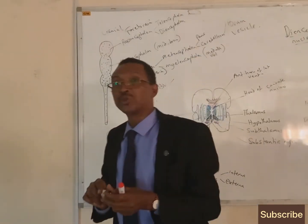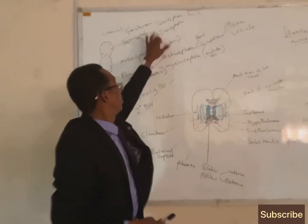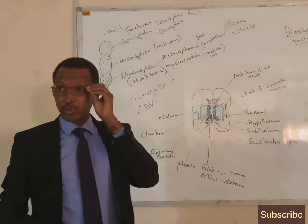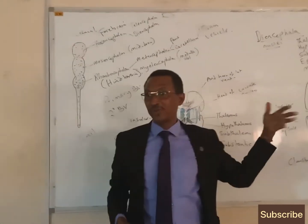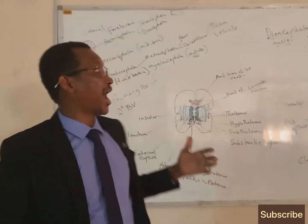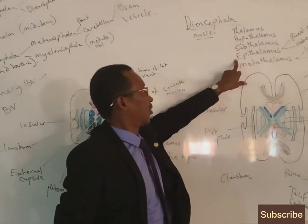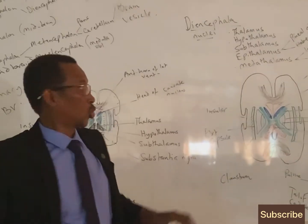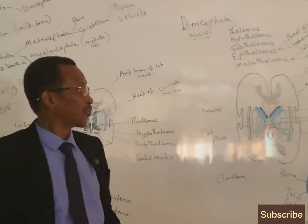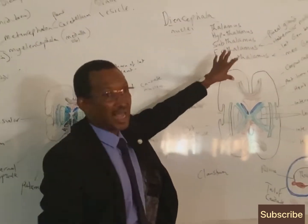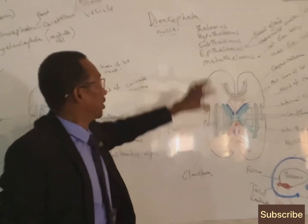We have now seen how these structures came to be. What we are going to discuss is the diencephalon, which resulted from the prosencephalon. The diencephalon consists of about five groups of nuclei: the thalamus, hypothalamus, subthalamus, epithalamus, and metathalamus — five important nuclei that group together to form the diencephalon.